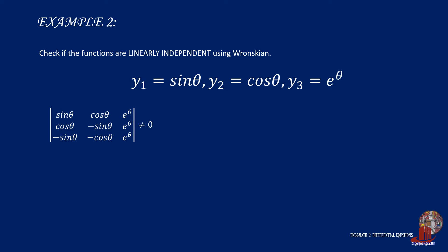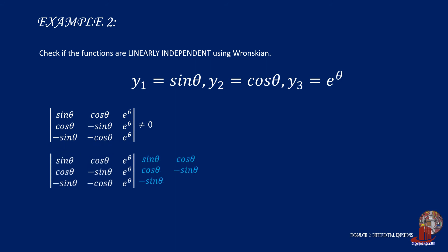There is a popular Sarrus method for determining the determinant, where we copy the first two columns of the matrix. Now we multiply the diagonals. Sine times negative sin theta times e raised to theta gives negative sin squared theta times e raised to theta. Cosine times e raised to theta times negative sin theta gives negative sin theta cosine theta times e raised to theta. And e raised to theta times cosine theta times e raised to theta gives negative cosine squared theta times e raised to theta.